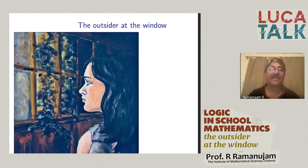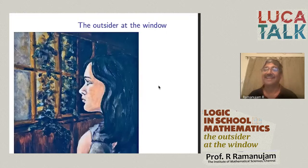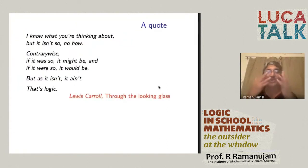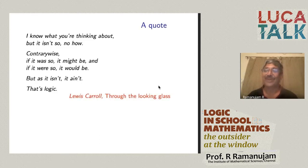This is a quite famous painting of a girl standing at the window and looking inside pensively, and this is my picture of logic as far as school mathematics is concerned. In some sense logic is there, but it's sitting outside and looking into the school curriculum. Here is a quote from Lewis Carroll's Through the Looking Glass: 'I know what you're thinking about, but it isn't so. Contrariwise, if it was so it might be, and if it were so it would be, but as it isn't it ain't — that's logic.'